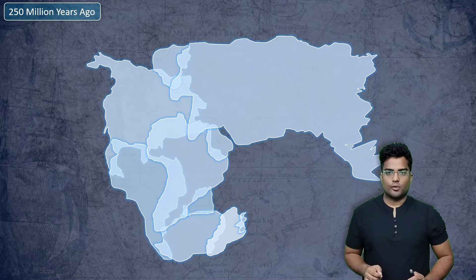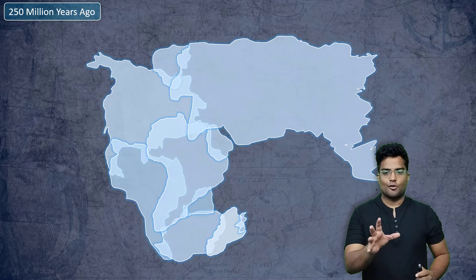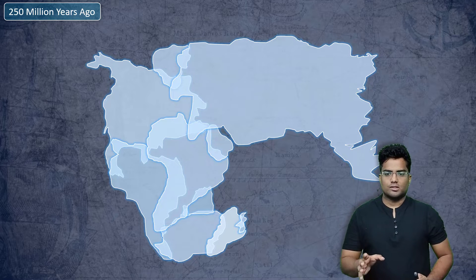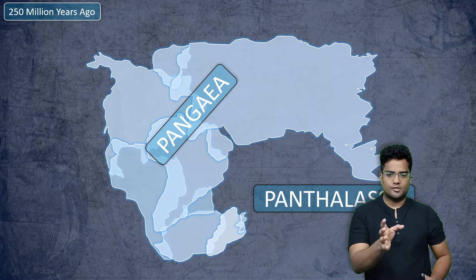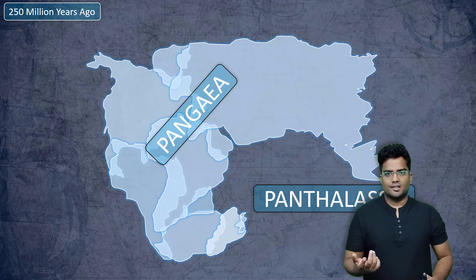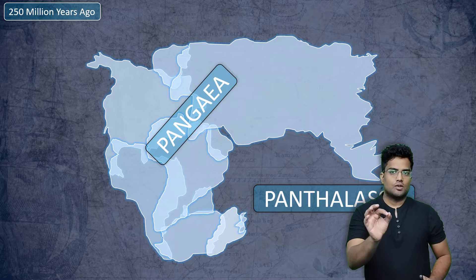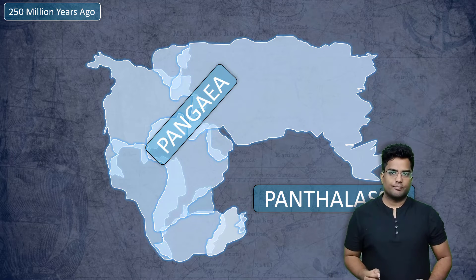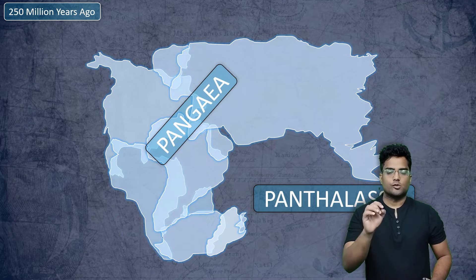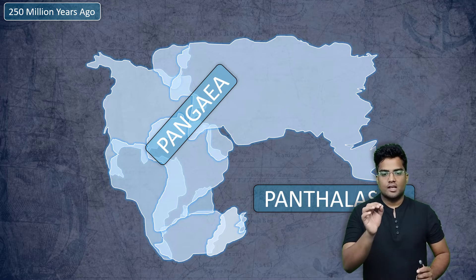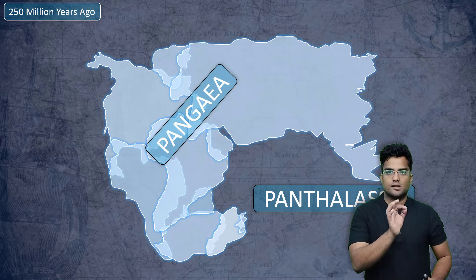Let's say 250 million years ago. This is how our planet looks like. You can see some parts of North America, some parts of South America. You can decipher some of these places. This whole megastructure was known as Pangaea. And the rest of the planet covered by the ocean is called Panthalassa — that's the name of the ocean. That is Pangaea and Panthalassa.